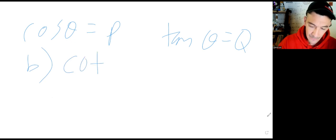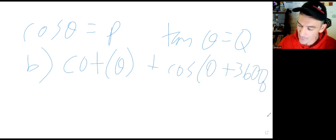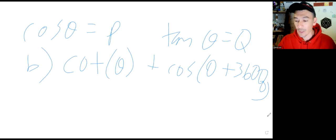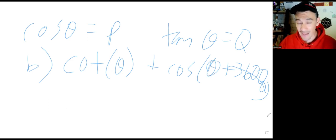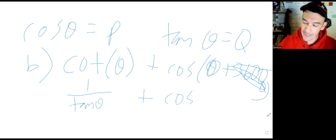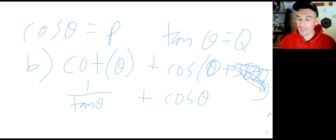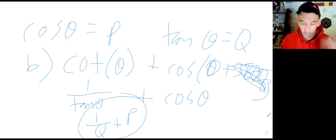For part b: cotangent of theta plus cosine of (theta plus 360-something). Any multiple of 360 cancels for cosine, so that term becomes cosine theta, which equals p. Cotangent equals 1 over tangent, which equals 1 over q. Final answer: 1 over q plus p.